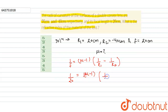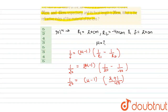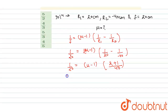So 1/20 = (μ − 1) × (1/20 + 1/40), which gives 1/20 = (μ − 1) × (2/40 + 1/40) = (μ − 1) × (3/40).